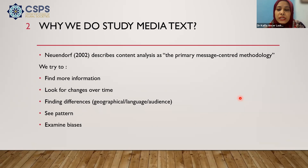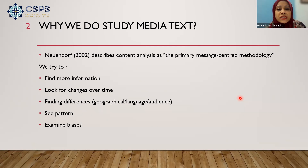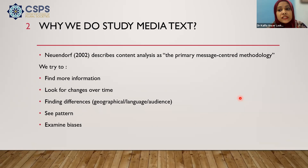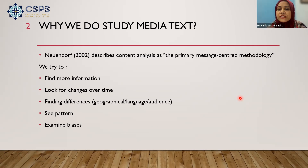Why do we do that? We actually do content analysis to try to find more information. We try to segregate information from prior information, find certain gaps to dig deeper into, and find certain differences — for example, geographical differences in a newspaper compared with another newspaper published somewhere else on a particular incident.